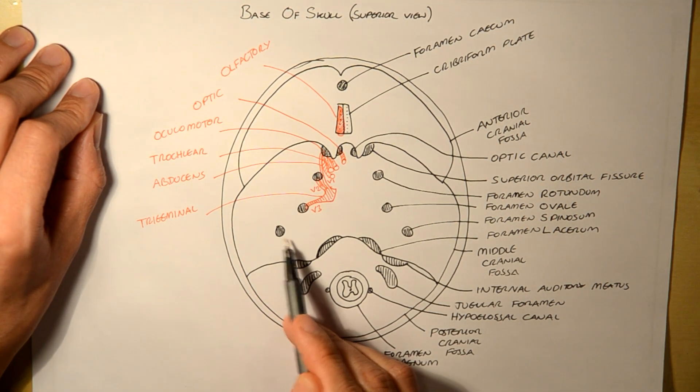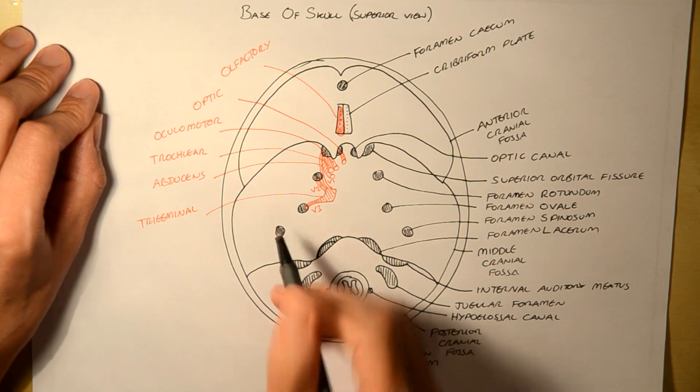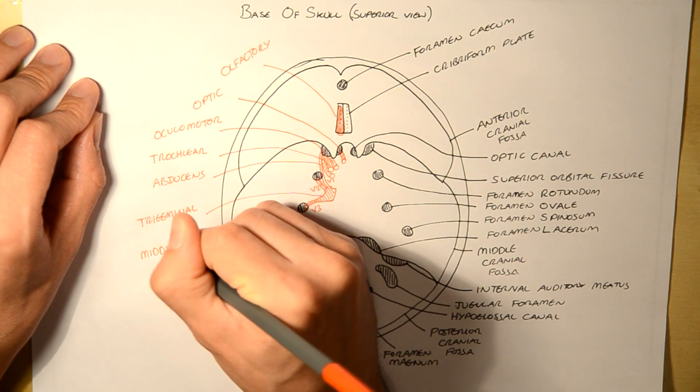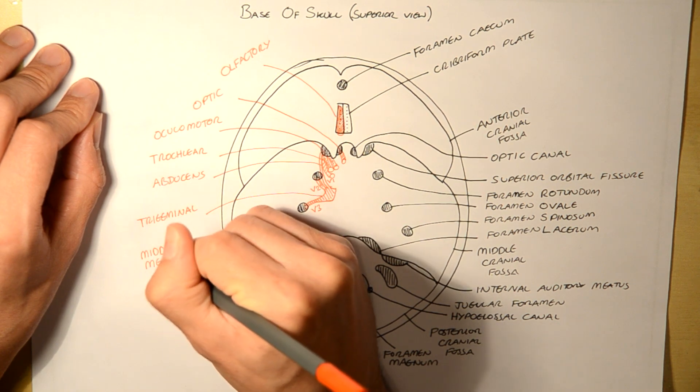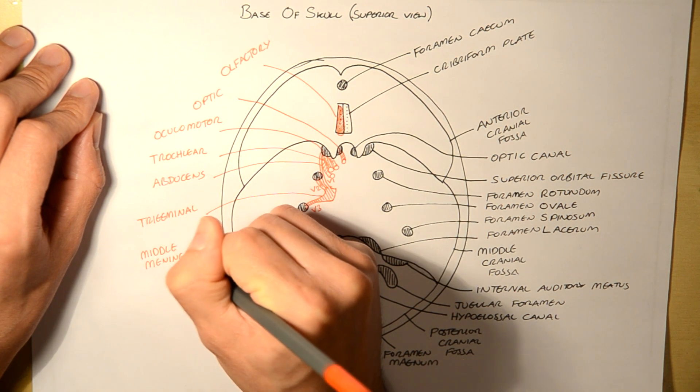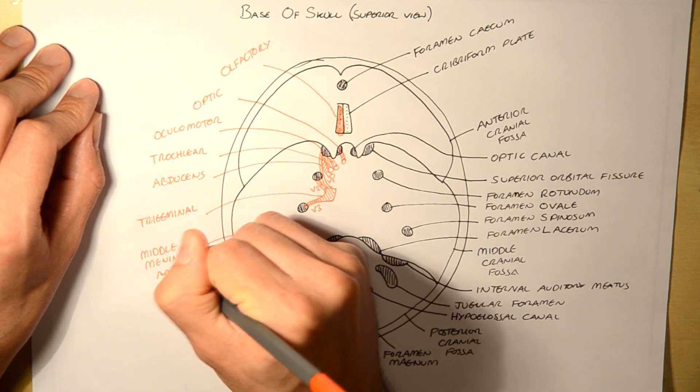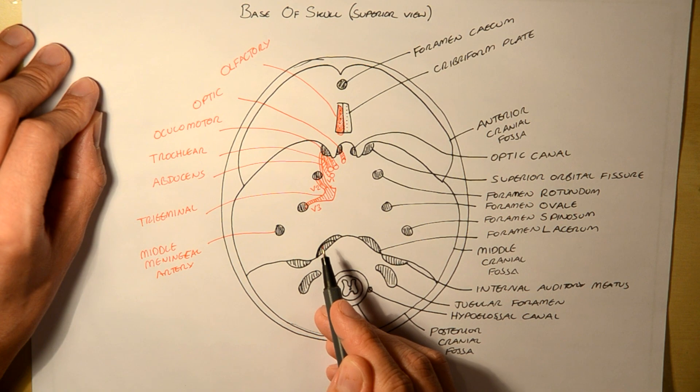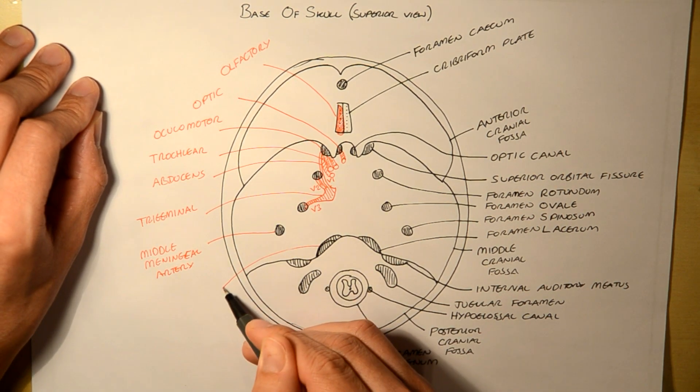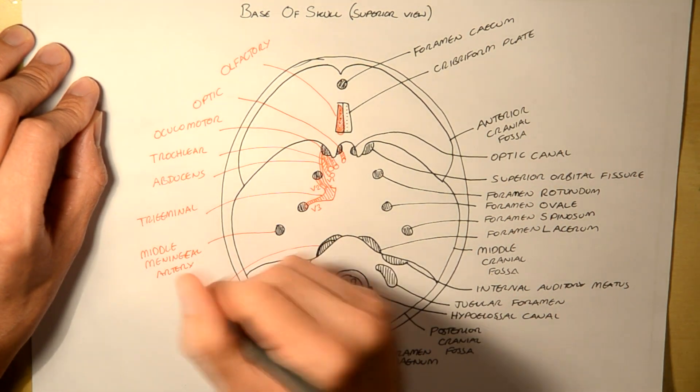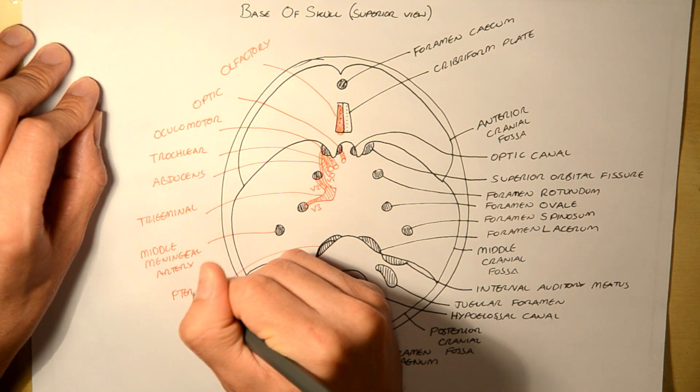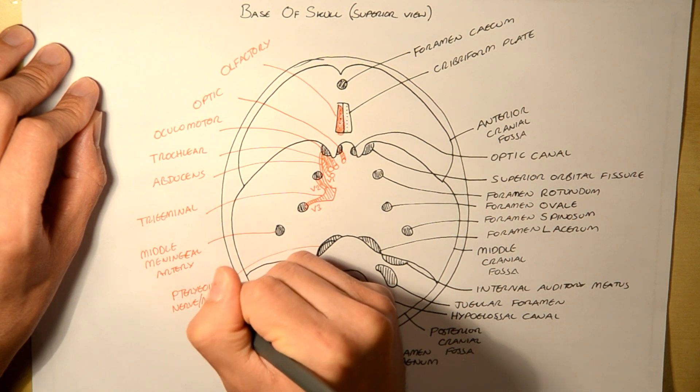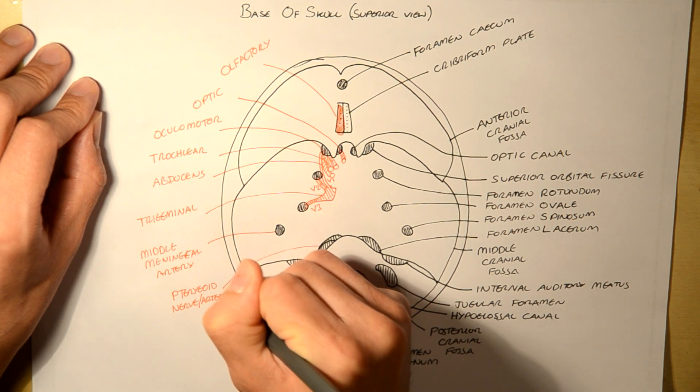So there's no cranial nerves that exit out of the foramen spinosum, but there is an artery that enters. It's the middle meningeal artery. And same here with the foramen lacerum. No cranial nerves, but you get the pterygoid artery and some veins.